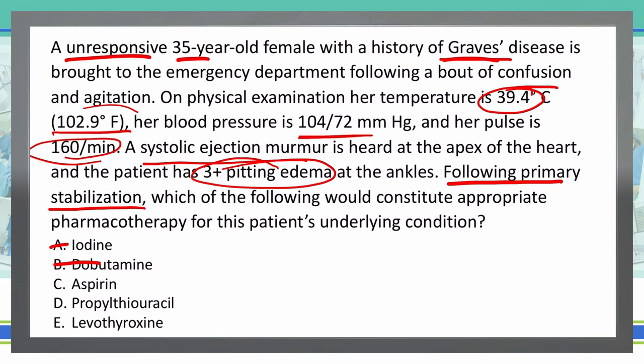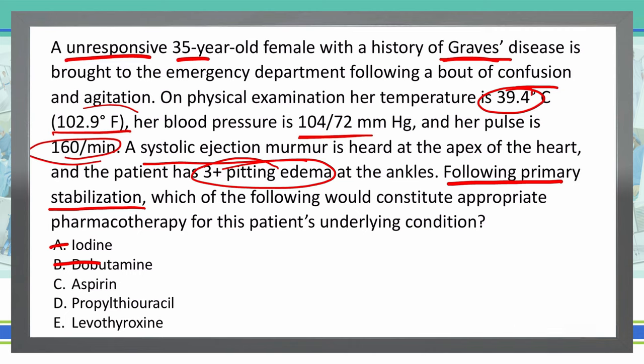C: Aspirin. Aspirin will actually displace thyroxine from thyroid binding globulin, which is the protein that binds to thyroxine. So we're actually going to be releasing more thyroxine into the body that can be active and useful — that's going to make it worse. So aspirin can cause the condition to become worse.